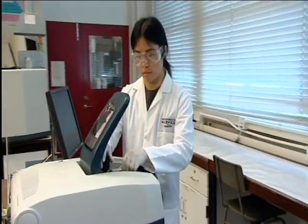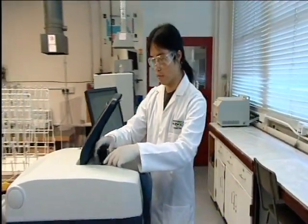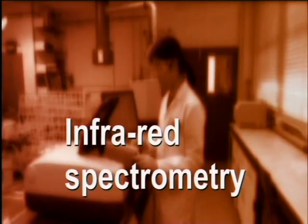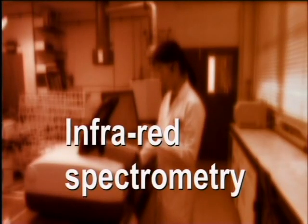Infrared spectrometry helps chemists to identify the functional groups present in a compound. It can therefore help in finding the structure of a compound.